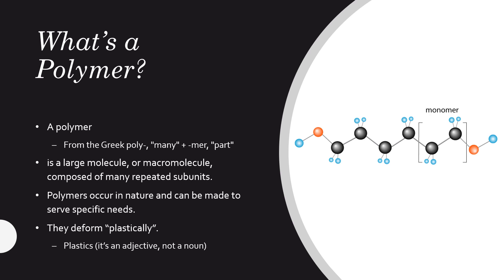A polymer is a large molecule, or macromolecule, composed of many repeating subunits. As you can see in the image, we have what we call a monomer — a small unit that has been repeated many, many times until it forms a long molecule, a long chain. Polymers are different from metals and ceramics, forming their own class of materials.